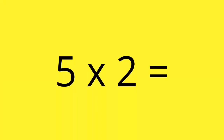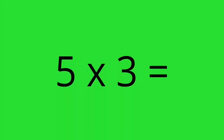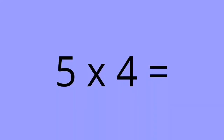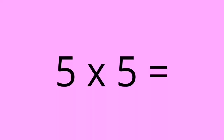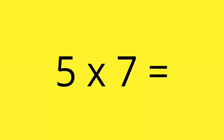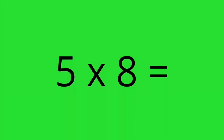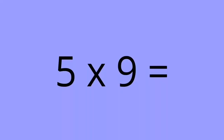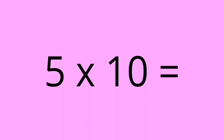Five times one equals five. Five times two equals ten. Five times three equals fifteen. Five times four equals twenty. Five times five equals twenty-five. Five times six equals thirty. Five times seven equals thirty-five. Five times eight equals forty. Five times nine equals forty-five. Five times ten equals fifty.